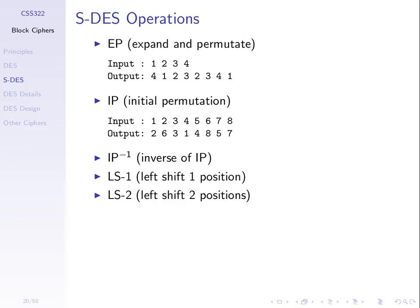The inverse initial permutation is: 4, 1, 3, 5, 7, 2, 8, 6. So just remember that an inverse operation means if we apply that operation followed by the inverse, we get the original input as output.